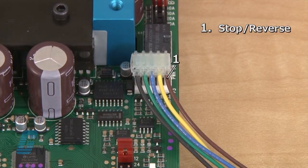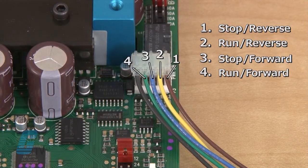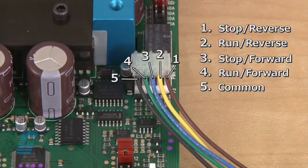On wire 1, I have the stop reverse with a brown wire. Wire 2 is the run reverse with a yellow wire. Wire 3 is the stop forward with the blue wire. Wire 4 is the run forward with the green wire, and the last wire is the common.